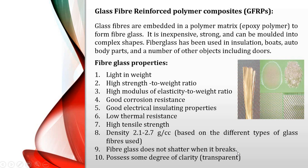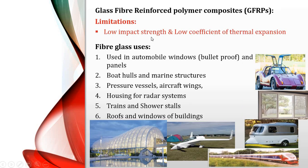Fiberglass does not shatter when it breaks. Its density ranges from 2.1 to 2.7 depending on the type of glass fibers used. The limitation is low impact strength and low coefficient of thermal expansion — when heated, glass expands and breaks under stress. Fiberglass is widely used in automobile windows, bulletproof panels, boat hulls, aircraft wings, radar systems, trains, shower stalls, and stadium roofing.